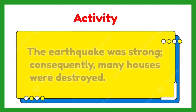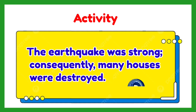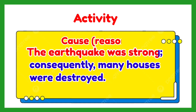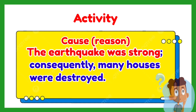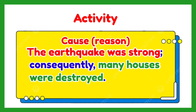'The earthquake was strong. Consequently, many houses were destroyed.' The cause is: the earthquake was strong. The effect — what happened after it, or its result — is: many houses were destroyed. This is the effect, introduced by the word 'consequently.'